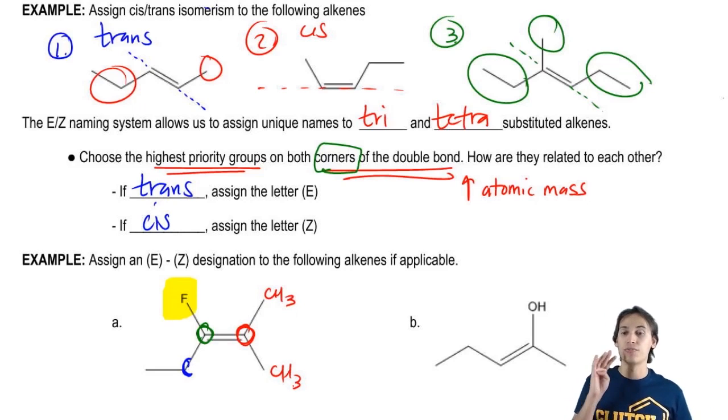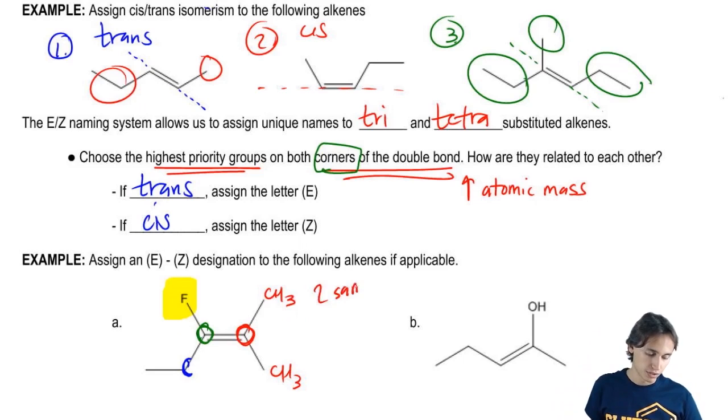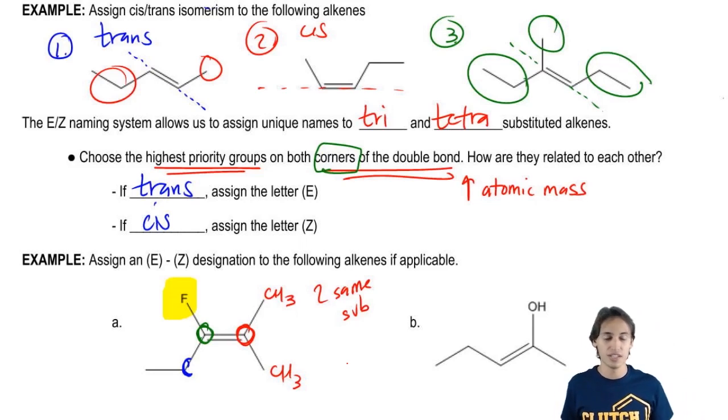So this is an example where I actually have four different substituents. But since I have two of the same substituent on a corner, I can't assign cis and trans or E and Z. Why? Because there's no way to distinguish these from each other.